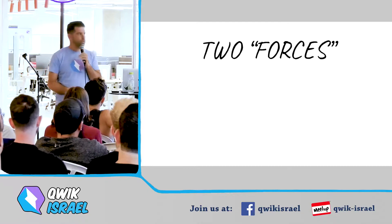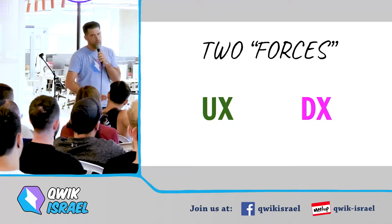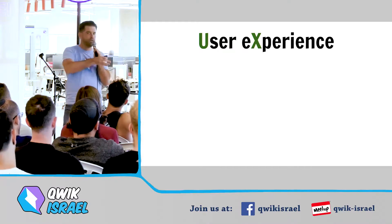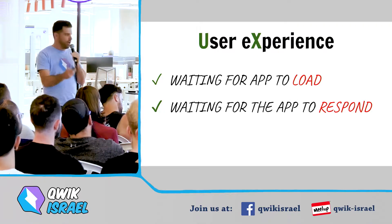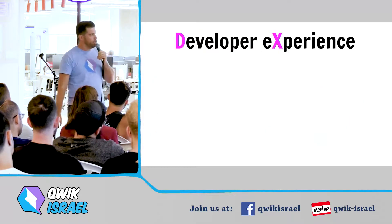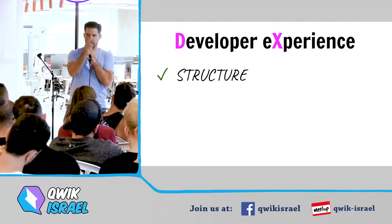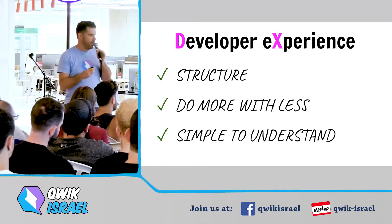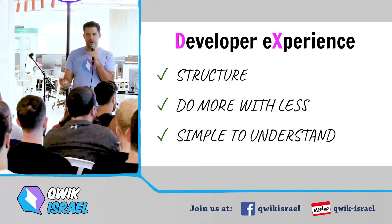Two forces drive web evolution: UX and DX. In terms of user experience, for the context of this talk: users waiting for the app to load, users waiting for the app to respond to their action and be interactive, and time spent redoing work — like a user having to refill a form they already filled. Developer experience boils down to three things: structure — I want to know where everything goes predictably; doing more with less code; and simplicity — not having to google what an API does again and again.